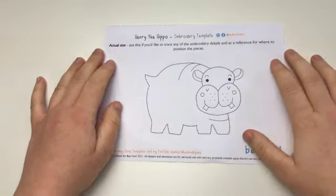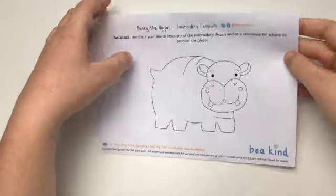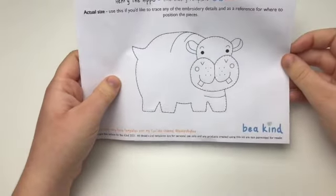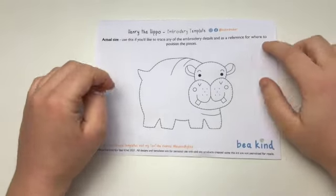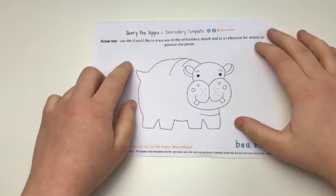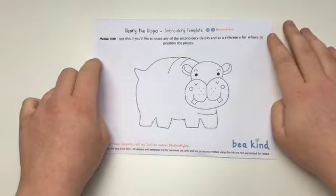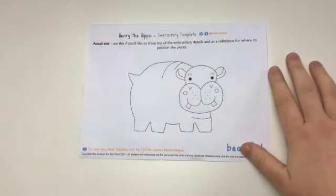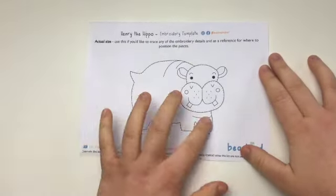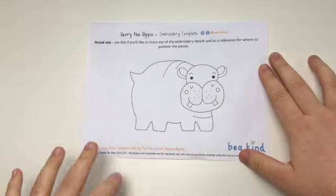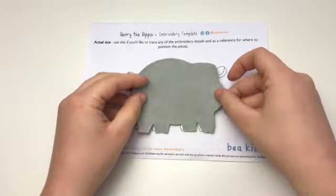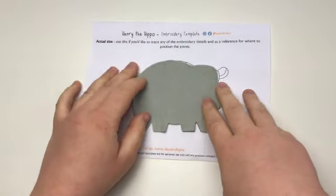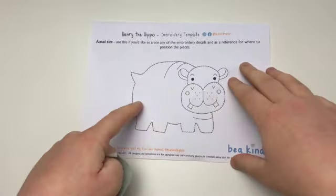You don't have to use these templates—they're included in all the kits—but it's just a way of transferring the design onto felt easily if you don't feel confident stitching freehand. This is the right size and scale. If I get one of my body pieces of the hippo that I've cut, it's the exact size, so you can literally just trace over it.